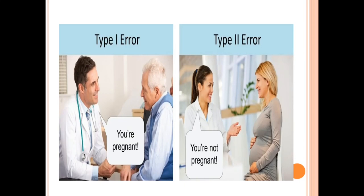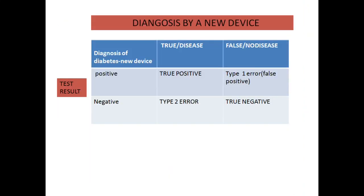Now let's move on to a higher-level example — we are checking a new device. We have a new device to detect diabetes, and we also have a gold standard device. We are trying to assess the properties of the new device by comparing it against the gold standard.